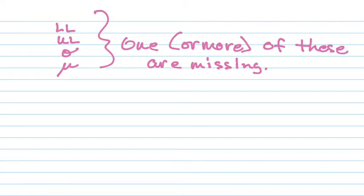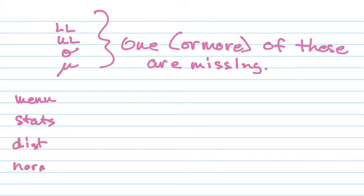If we have one or more values missing, we still use our calculator. Go to menu, stats, distribution, normal — none of that has changed. But last time we hit NCD; this time, next to that, there was another button that said inverse normal. That's the one we're going to be working with now.